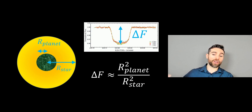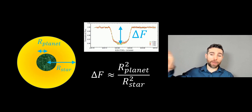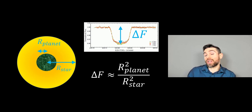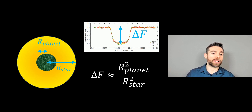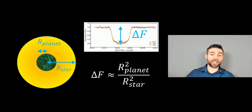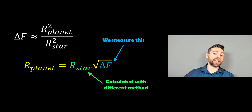Here's the equation. Delta f is the change in brightness, normally referred to as flux, normalized to the general brightness of the star. On the y-axis the normalized flux is 1, and delta f is the depth — how much the brightness changes as the planet passes in front. The equation is essentially the area of one circle minus the area of another. So delta f is approximately equal to the radius of the planet squared over the radius of the star squared. If we want the radius of the planet, it's the radius of the star times the square root of delta f.